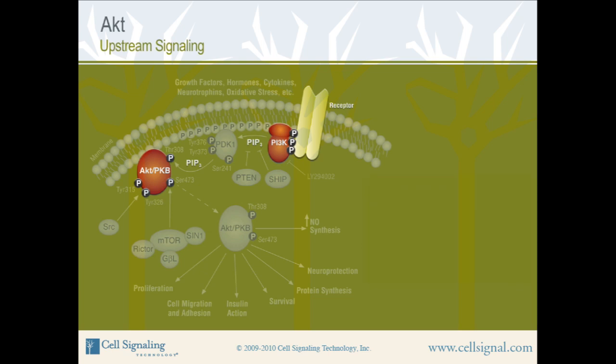At the membrane, PDK1 phosphorylates AKT at threonine 308. Threonine 308 is on the AKT activation loop and is within the AKT kinase domain.